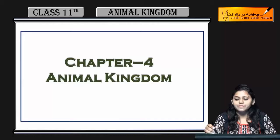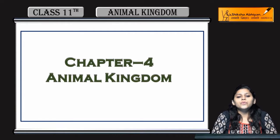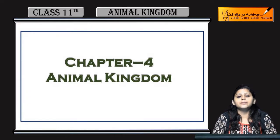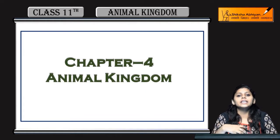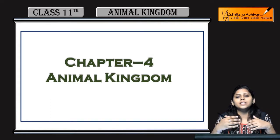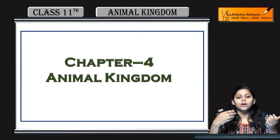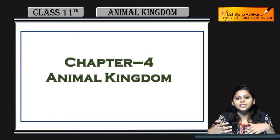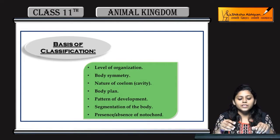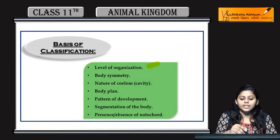Hello everyone, let's start with Chapter 4 - Animal Kingdom. We have read in the last chapter that classification is very important for living organisms. So we have to classify animals because there are so many animals, and we need to know how to differentiate them and see their evolutionary relationships. We have to classify animals - on what basis do we do classification? The basis of classification is the level of organization.